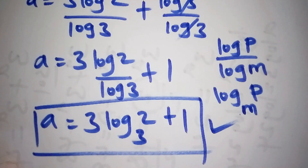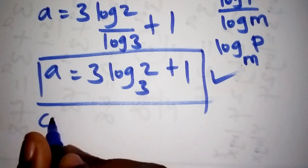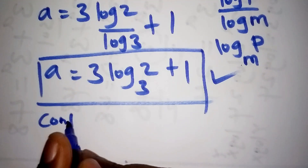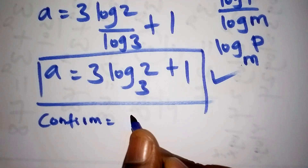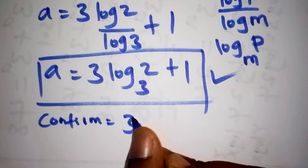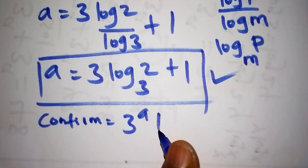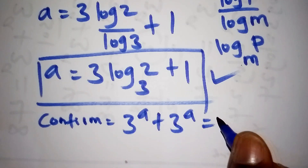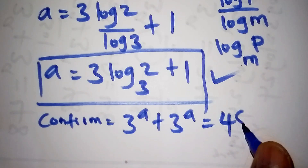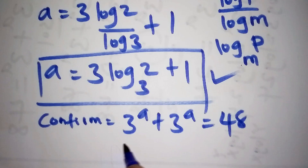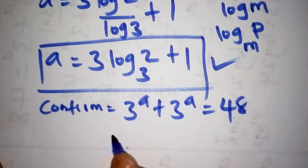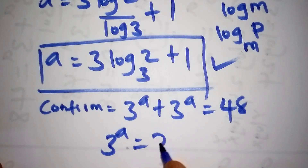So if you really loved how we worked it out, please don't forget to subscribe. So let's now confirm it. Our equation was 3 to the power of a plus 3 to the power of a is equals to 48. We had factorized this to get 3 to the power of a is equals to 24.